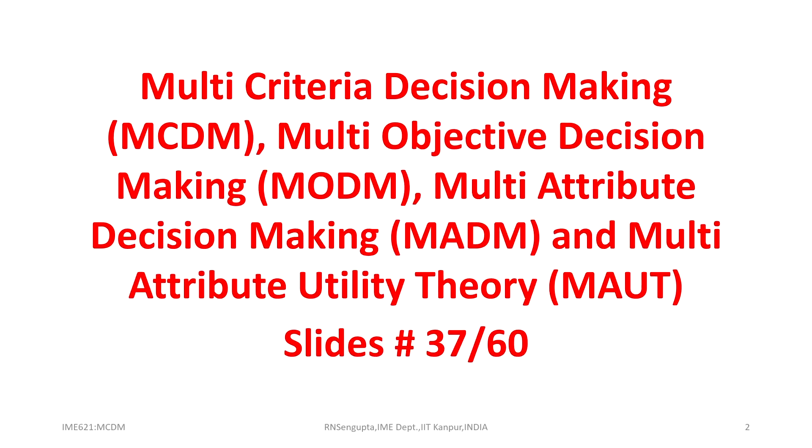The broader outline for this 37th lecture follows what we have been doing over a long set of weeks: multi-criteria decision making as the main topic, under which we have been discussing multi-objective decision making with different examples, multi-attribute decision making, and multi-attribute utility theory.